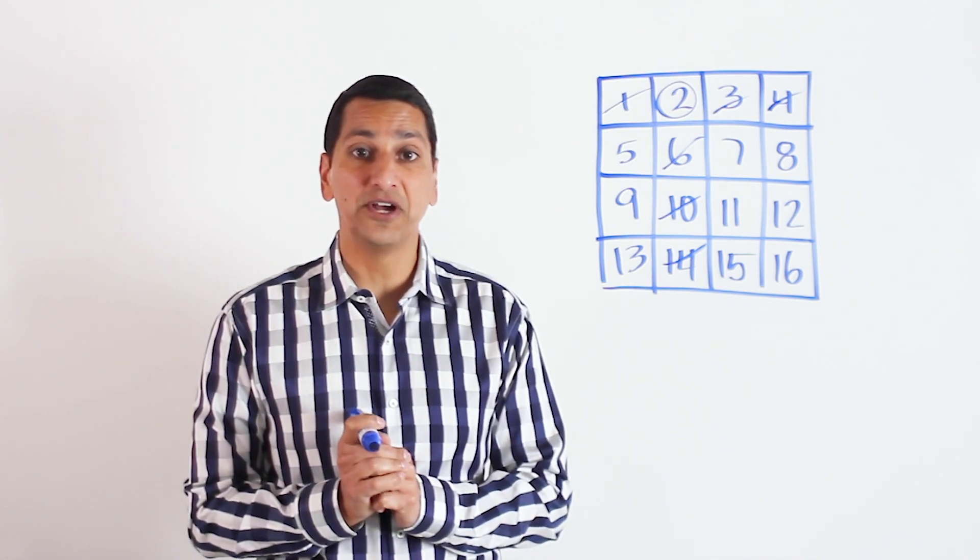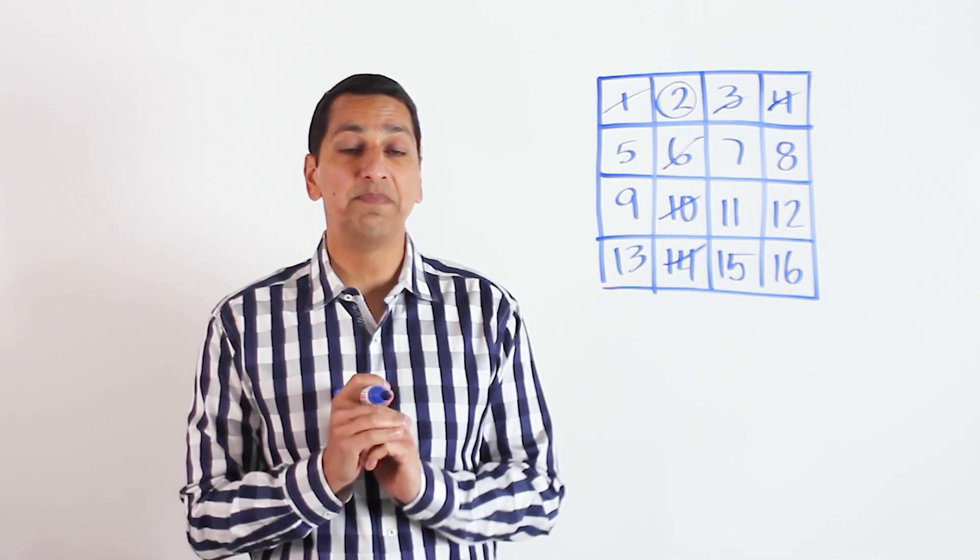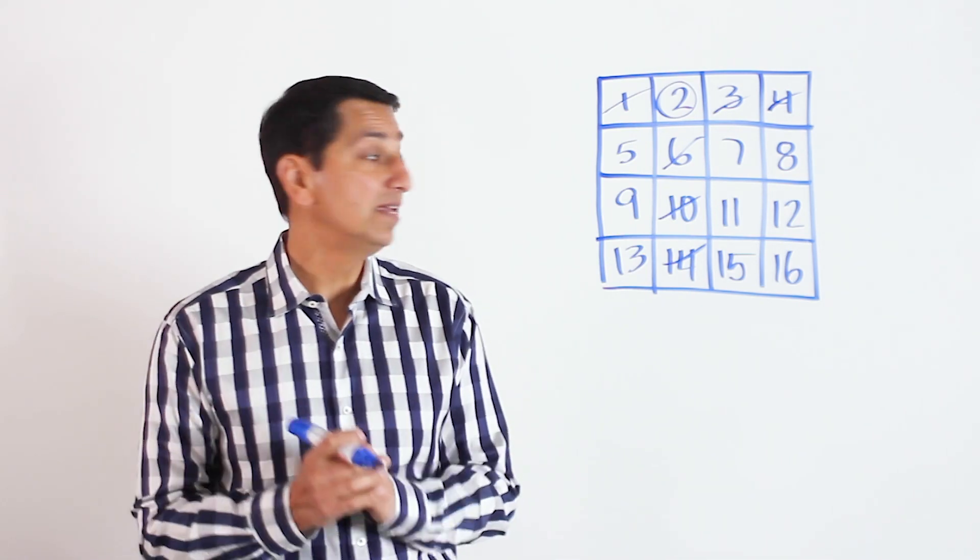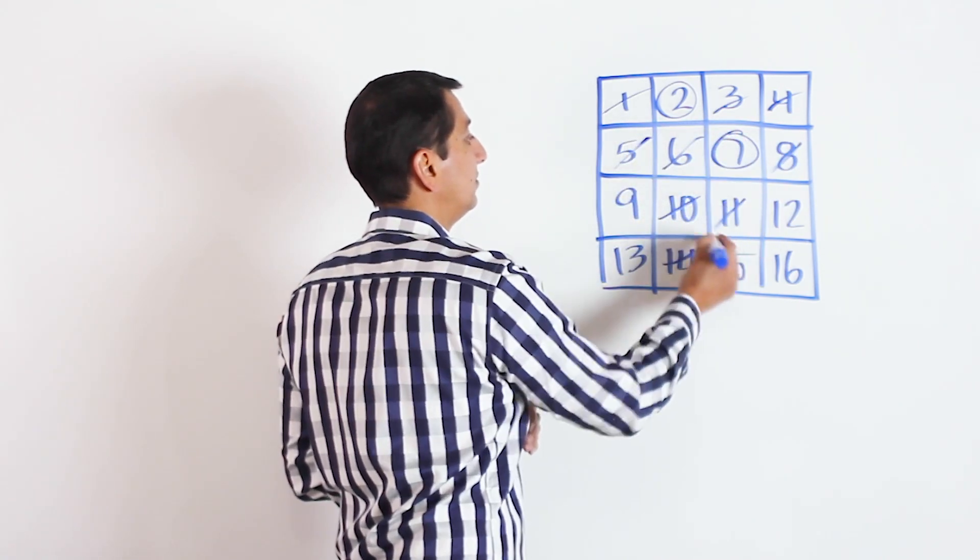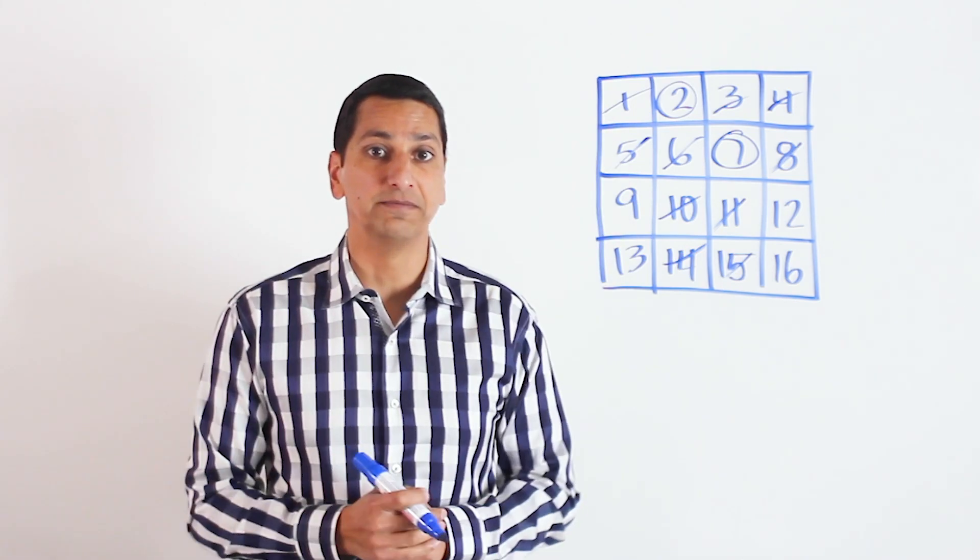Those numbers may not be chosen in the future, then have them shift to the second row and pick a number that is not crossed out from the second row. Maybe they choose seven. Again, we cross out everything in the same row in the same column as the seven.